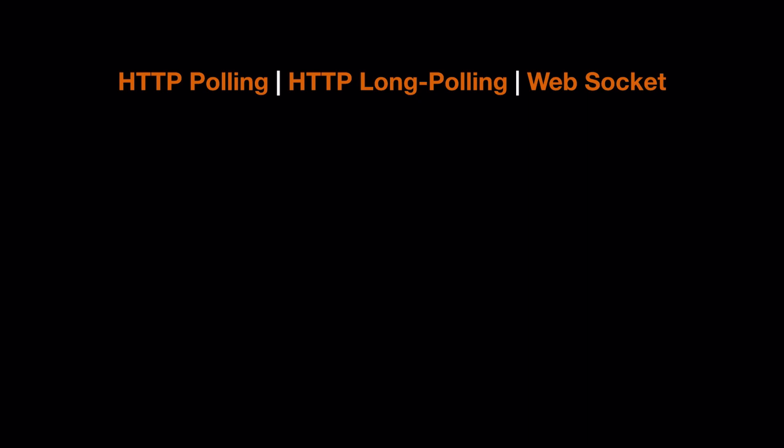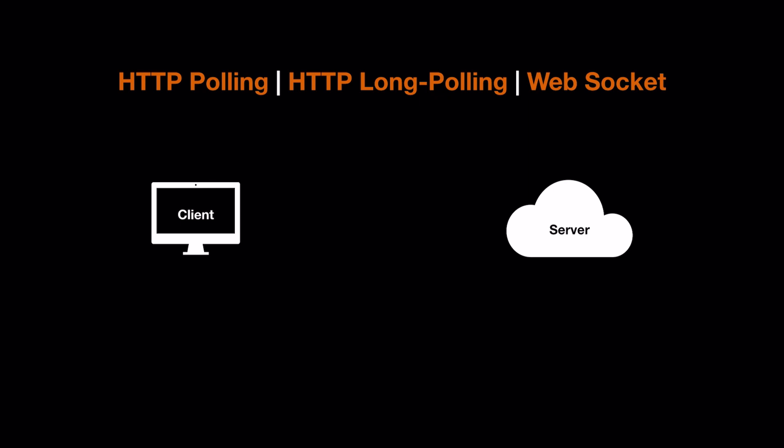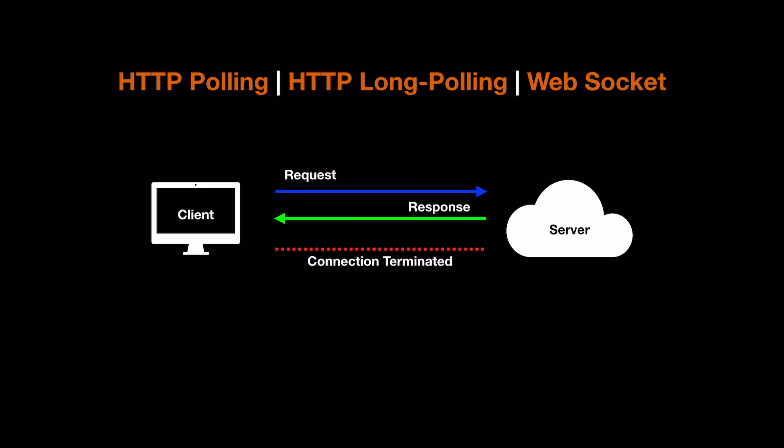In this video we will talk about HTTP polling, HTTP long polling, and WebSocket — three different techniques for client-server communication. In a client-server architecture, the client first sends a request to the server, the server does some processing, and if it has data for the client it sends it as a response. Finally, the HTTP connection is closed.